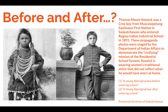Thomas Moore Kisick was a Cree boy from the Muskapow-Tung Salto First Nation in Saskatchewan, who entered Regina Indian Industrial School in 1891. These propaganda photos were staged by the Department of Indian Affairs to demonstrate the civilizing mission of the residential school system. Kisick is wearing women's traditional attire that did not reflect what he would have worn at home.